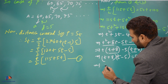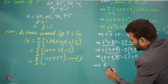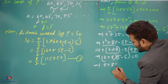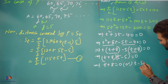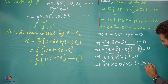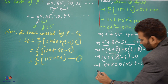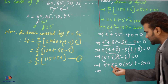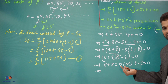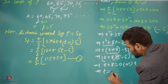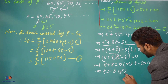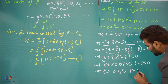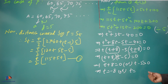Setting each factor to zero: t + 8 = 0 or t − 5 = 0, giving t = −8 or t = 5.